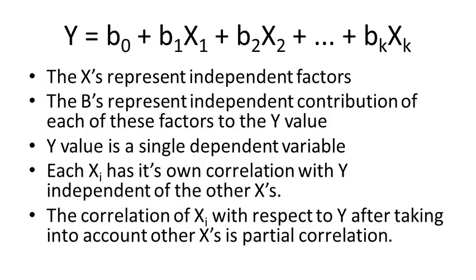Each x sub i has its own correlation with y, separate from all the others. The correlation of any one variable with respect to y after taking into account all the other variables is called a partial correlation. Let's dive into that a bit more.